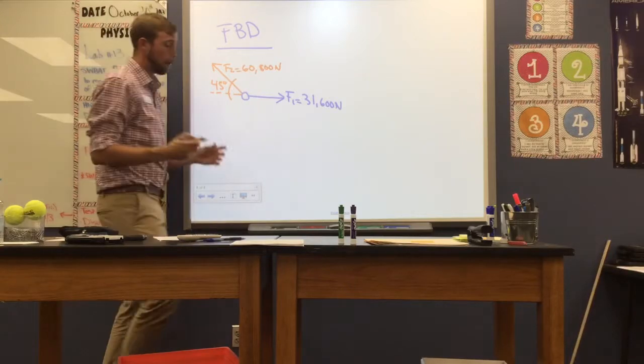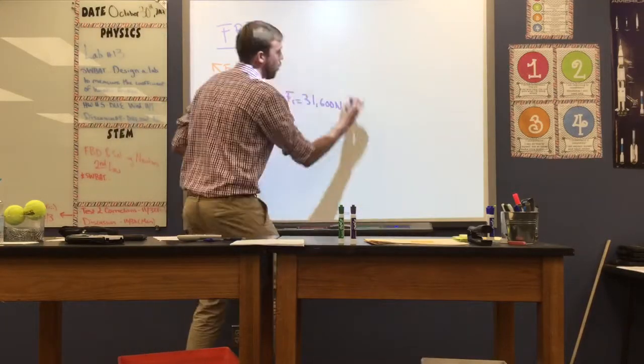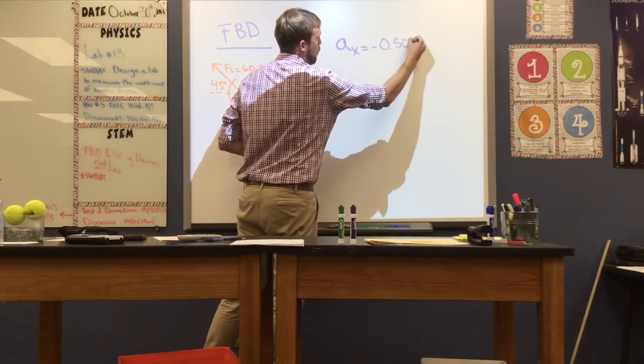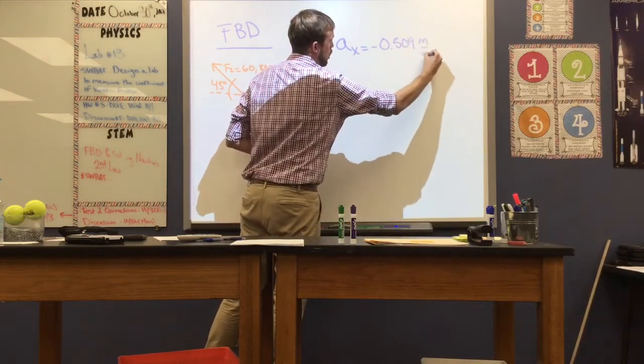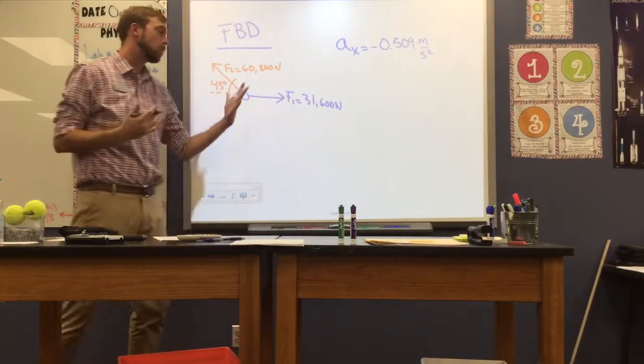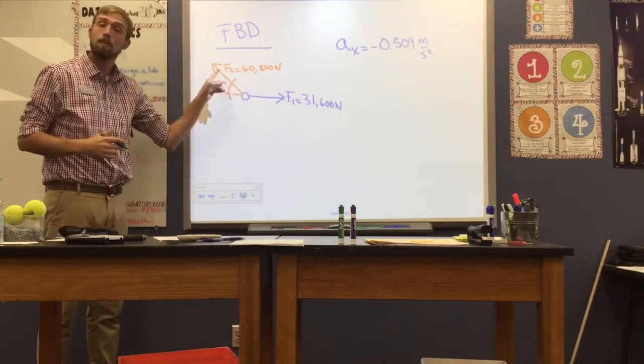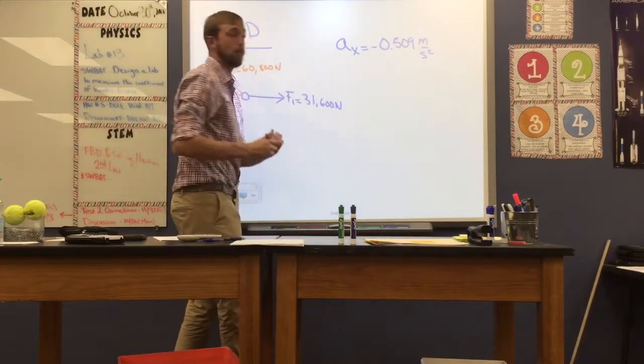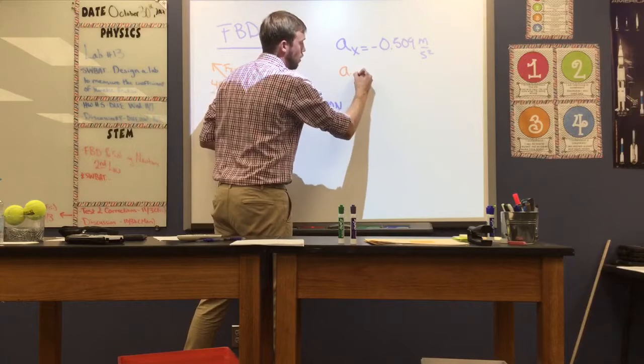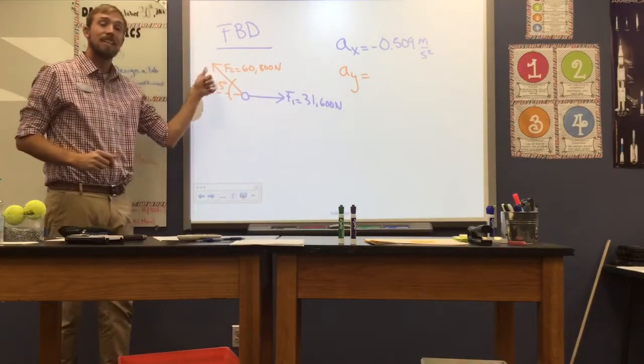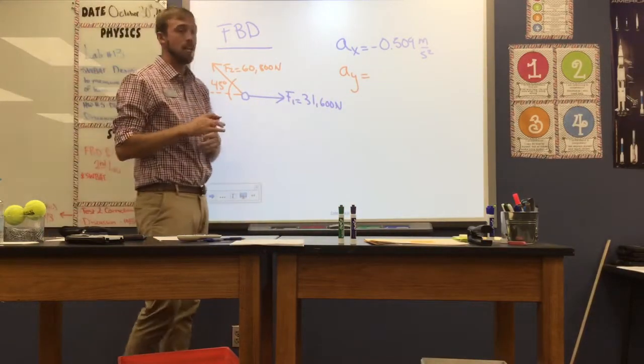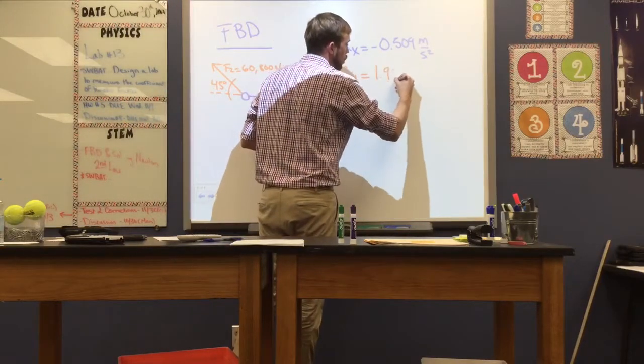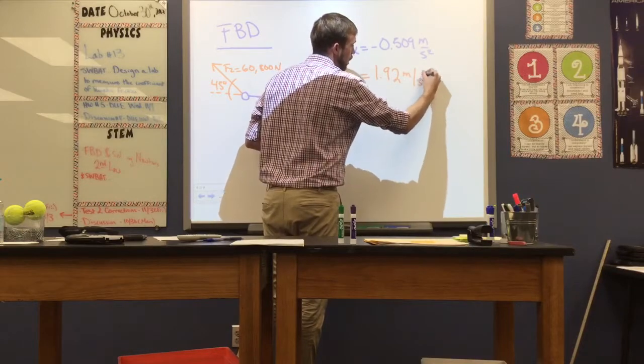And we found a couple of different values there. We found that we had an acceleration in the x direction of negative 0.509 meters per second squared by summing up the forces in the x direction, F1 and the x component of F2 and dividing by our mass. We also were able to find our acceleration in the y direction. And we were able to do that by summing up the forces in the y direction and dividing by mass according to the relationship of Newton's second law. And that value was about 1.92 meters per second squared.